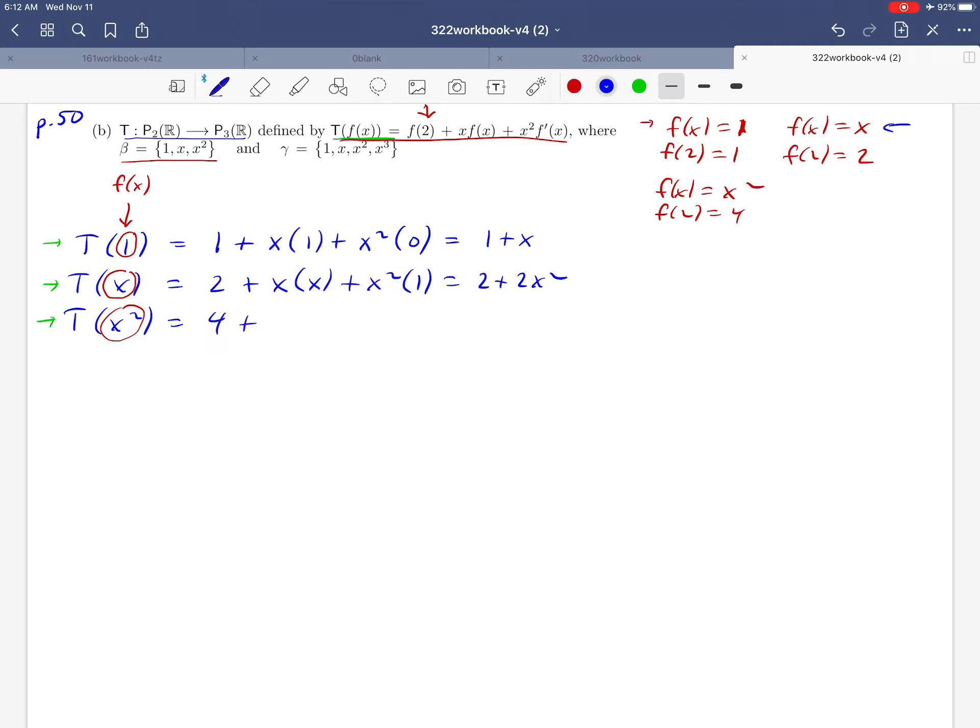And then we move on to x f of x. So that's going to be x times f of x, which is x squared. And then finally, x squared times the derivative of f of x. Derivative of x squared is 2x. And if you simplify that down this time, we're going to get 4 plus x cubed plus 2x cubed. That's going to be 4 plus 3x cubed, it looks like.